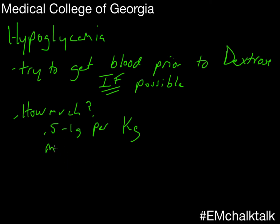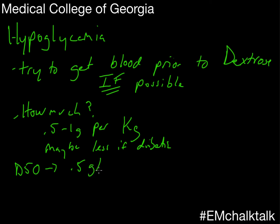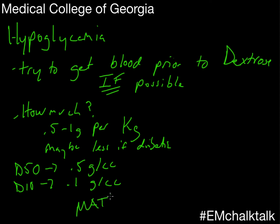So how do you do that math? Think about what you're talking about when you've got D50: D50 is 50% glucose, so it's 0.5 grams per cc. D10 is 0.1 grams per cc. If you're giving a 0.25 grams per kilo bolus of sugar using D10, that works out to two and a half cc's of D10 per kilo, which equals 0.25 grams per kilo of sugar.